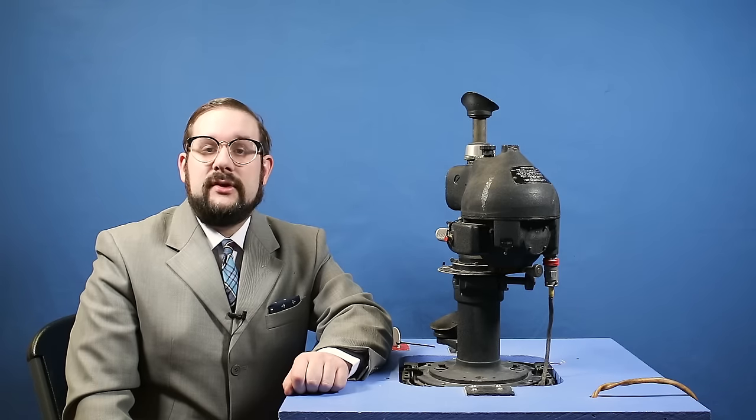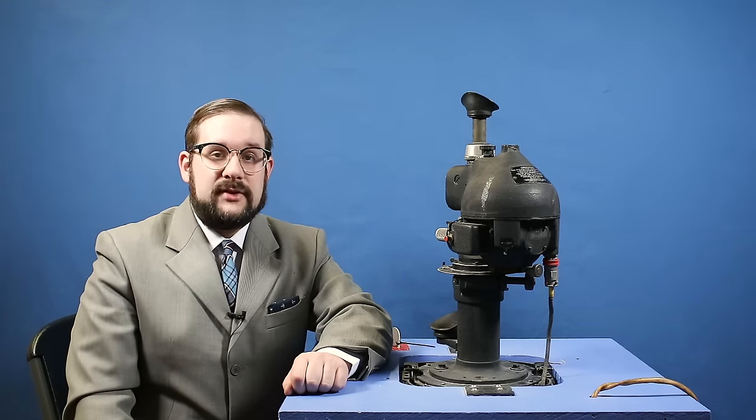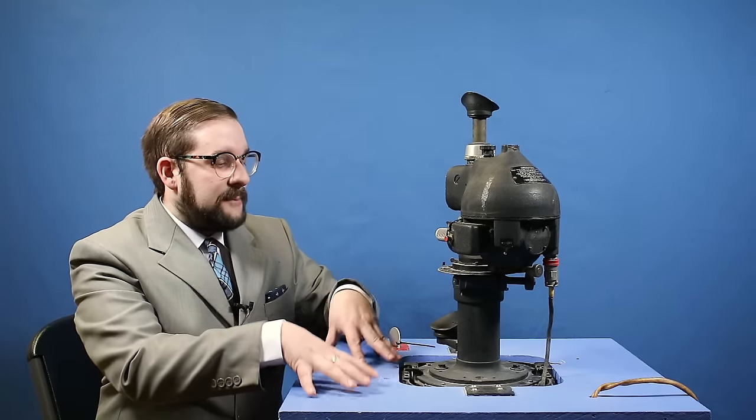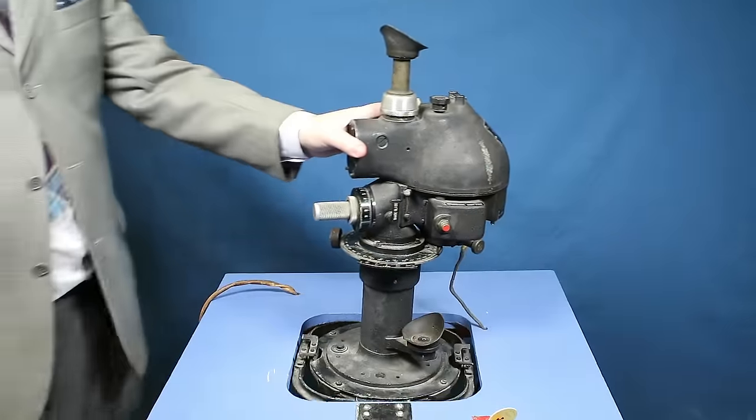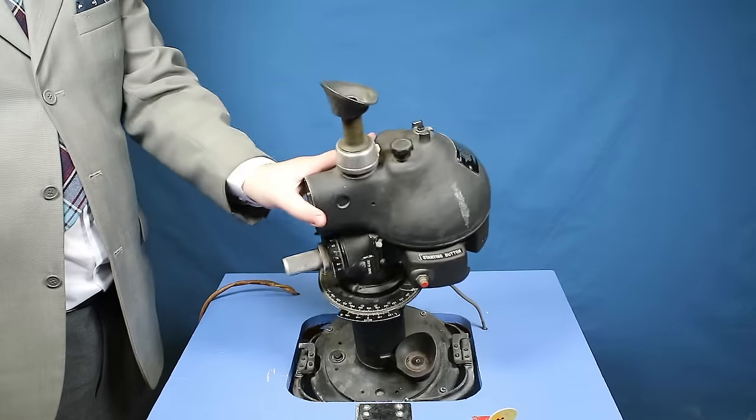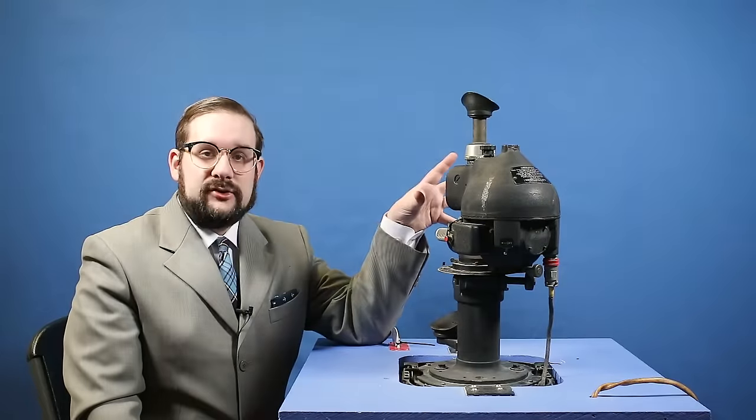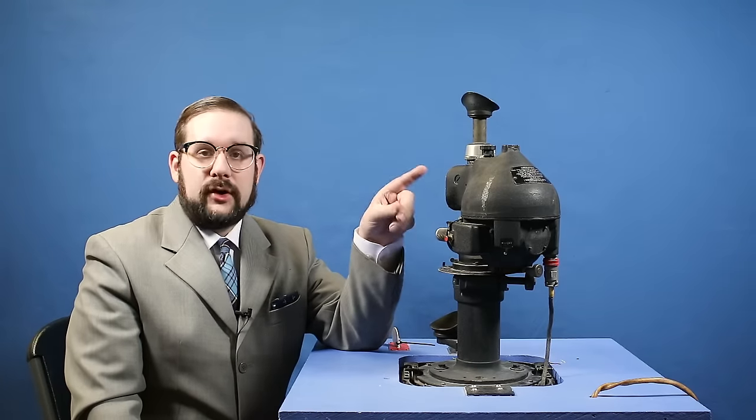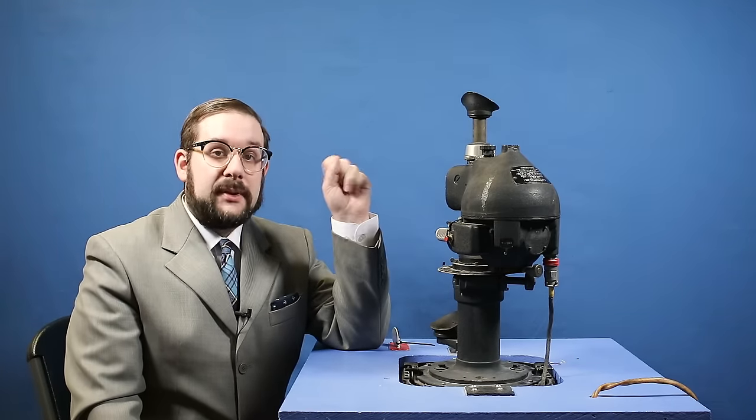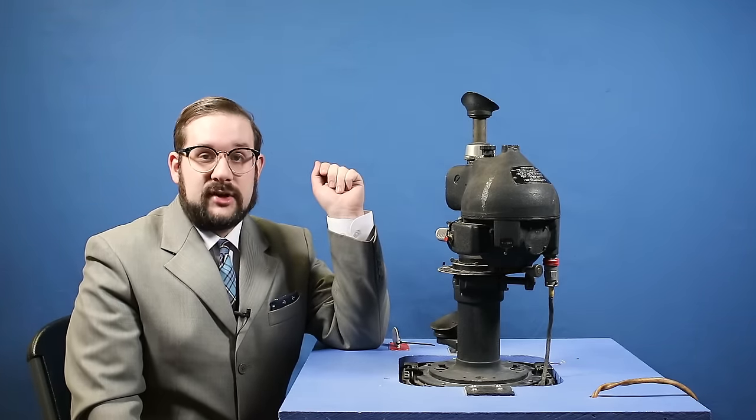This particular example comes from the navigation school here at CFB Winnipeg and would originally have been mounted in a C-47 aircraft which were used as navigation trainers in the 1950s and 60s. As you can see this example has been mounted on a stand for classroom use. While this is in a gimbal mounting to demonstrate the action of the gyroscope, in actual use this would be solidly bolted to the floor of the aircraft and only the internal optics would be gyroscopically stabilized.